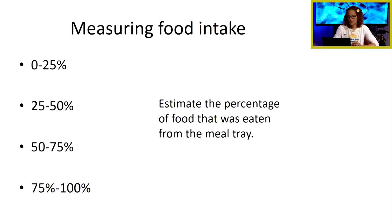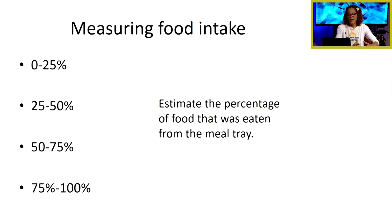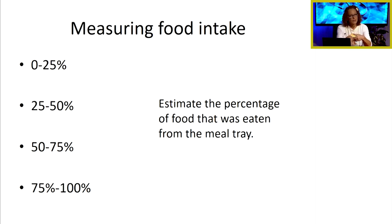When measuring food intake, we estimate the percentage of food eaten from the meal tray. It's not an exact measurement — we look at what came on the tray and identify how much was consumed when the patient finishes. We might document 0–25%, 25–50%, 50–75%, or 75–100% of the meal. Residents can decide how much to eat, but it's our responsibility to ensure they get adequate nutrition.